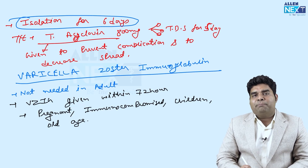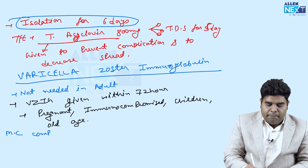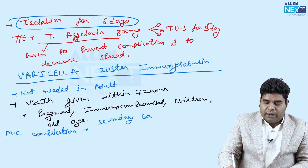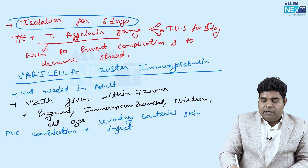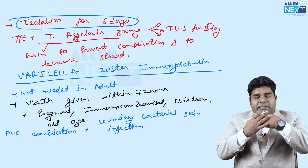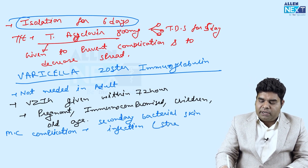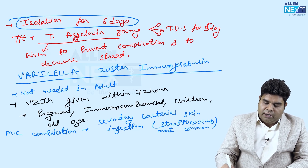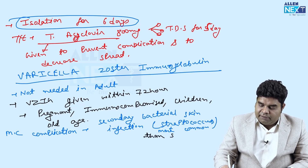The last PSM question from chickenpox asks: what is the most common complication of chickenpox? The most common complication is secondary bacterial skin infection. When the chickenpox pustules rupture, symbiotic bacteria of the skin can enter and cause infection — streptococcus and staphylococcus can occur, but streptococcus is more common than staphylococcal infection after chickenpox.